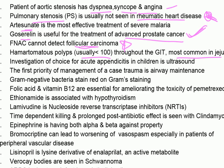Hamartomatous polyps are usually less than 100 throughout the GIT and are most common in the jejunum. If more than 100, it is called familial adenomatous polyposis (FAP). Investigation of choice for acute appendicitis in children is ultrasound. The first priority of management in trauma is airway maintenance.